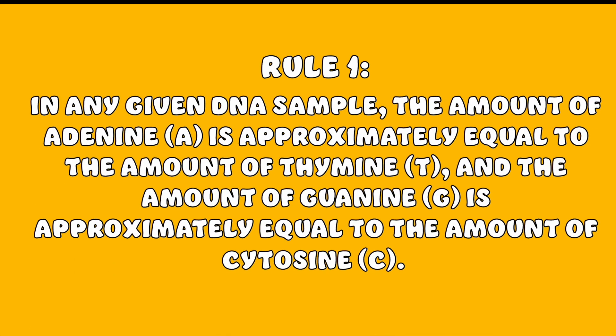Here are the two main rules. Rule 1: In any given DNA sample, the amount of adenine is approximately equal to the amount of thymine, and the amount of guanine is approximately equal to the amount of cytosine. This is often represented as A equals T, and G equals C.